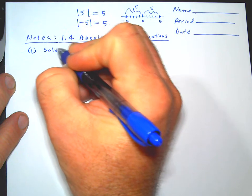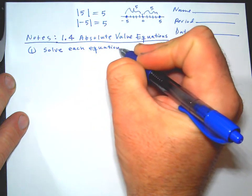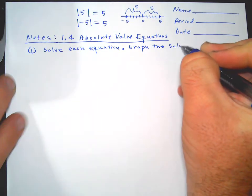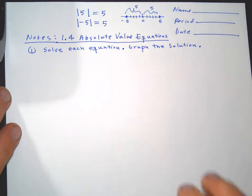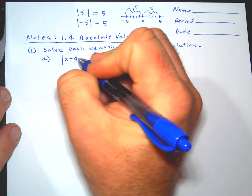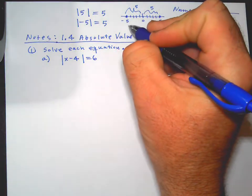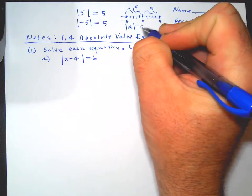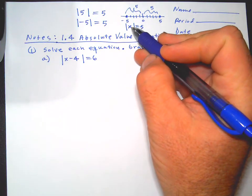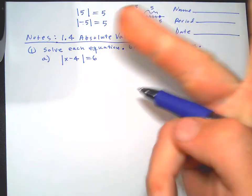Let's do some examples — solve each equation and then graph the solution. So let's try: absolute value of x minus 4 equals 6. If we think about the equation absolute value of x equals 5, what could you plug in to get an answer of 5? You could plug in 5, or you could plug in negative 5 and it would also work. So usually absolute values boil down to two answers, two solutions.